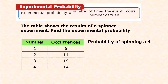Experimental probability involves finding the probability from the result of an actual experiment. For example, this table shows the result of a spinner experiment — they actually spun the spinner a number of times. To find experimental probability, find the number of times the favorable outcome occurs and divide by the number of trials.